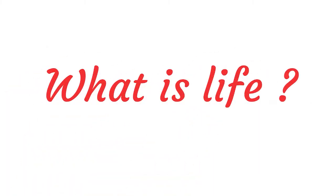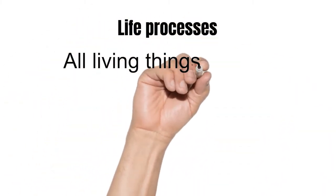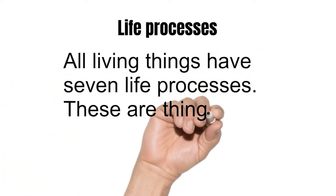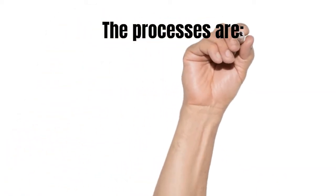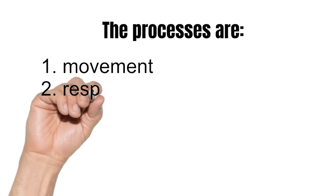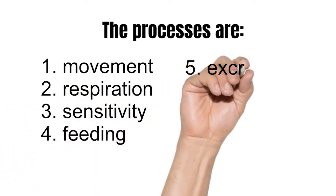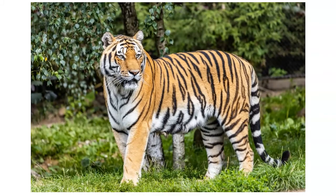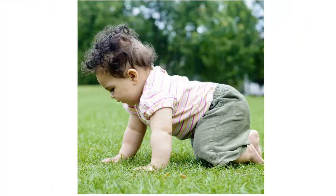What is life? Life processes — all living things have seven life processes. These are things that all animals and plants do. The processes are movement, respiration, sensitivity, feeding, excretion, reproduction, and growth.